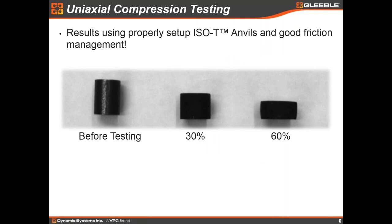With proper setup of the ISO-T anvils and good friction management, we can actually get very good uniform deformation in the sample. This sample shows a 60% reduction, and you can see a slight amount of barreling. Obviously you could never get rid of friction entirely, but this is actually a very good setup result. This will give you data that you can use directly without a lot of mathematical correction for barreling and friction.